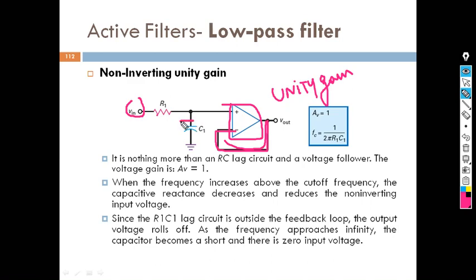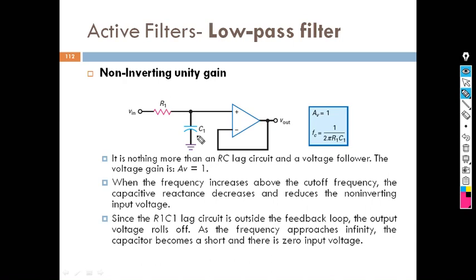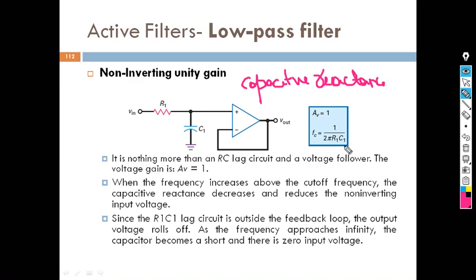The input is given through resistor R and capacitor C1 to the non-inverting terminal, and capacitor C1 is connected in shunt or in parallel. Now, how does this work? A capacitor provides capacitive reactance. The formula for capacitive reactance is 1 divided by 2πfC, where f is the frequency.